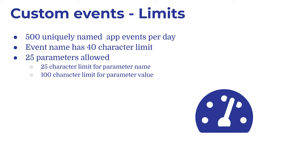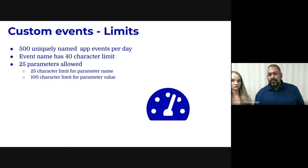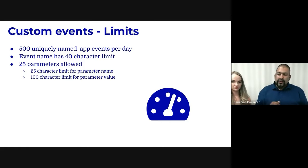A few disclaimers: you can have up to 500 uniquely named app events per day — this is to prevent high cardinality in your reports. You want your events grouped so you don't have to go to a very granular level to choose events for reporting. Every event name has a 40-character limit — that's a back-end limitation. And you're allowed up to 25 custom parameters per event — that is any additional information you want to attach to make the event more specific.